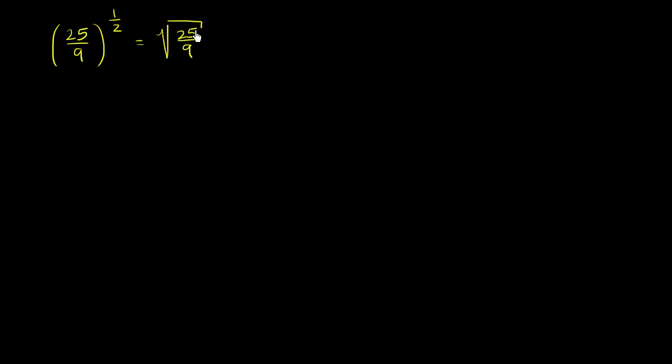Well, we know 5 times 5 is 25, and 3 times 3 is 9, so why don't we just go with 5 over 3? Because notice, if you have 5 over 3 times 5 over 3, that is going to be 25 over 9. Or another way of saying this, that 5 over 3 squared is equal to 25 over 9. So 25 over 9 to the 1/2 is going to be equal to 5/3.